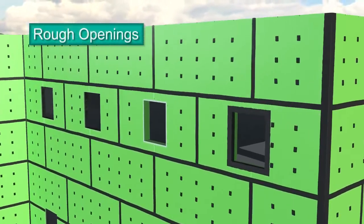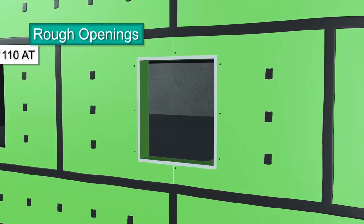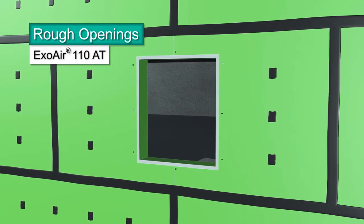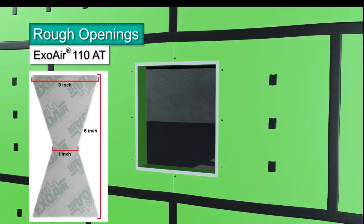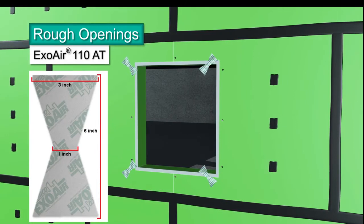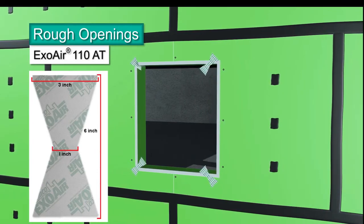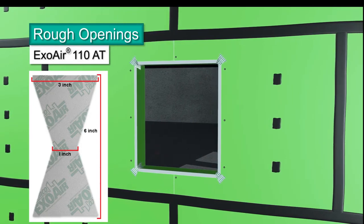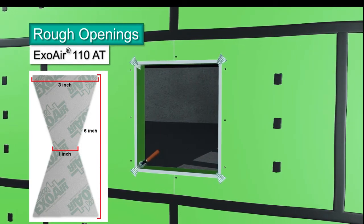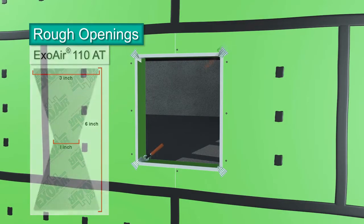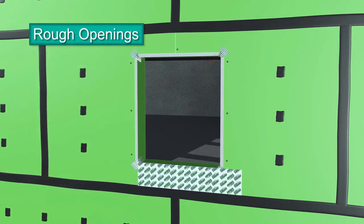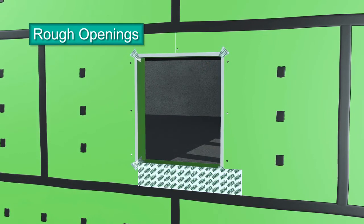Detailing rough openings with Dimonic 100 is the recommended application. Using ExoAir 110 AT is a second option. Cut pieces of the ExoAir 110 AT into a bowtie shape 6 inches long, 3 inches wide at each end and 1 inch wide at the center. Remove the release paper and apply bowties to each corner with the jams, sill and head meet. Press firmly and roll into the corners and onto the face of the panel to remove air bubbles.